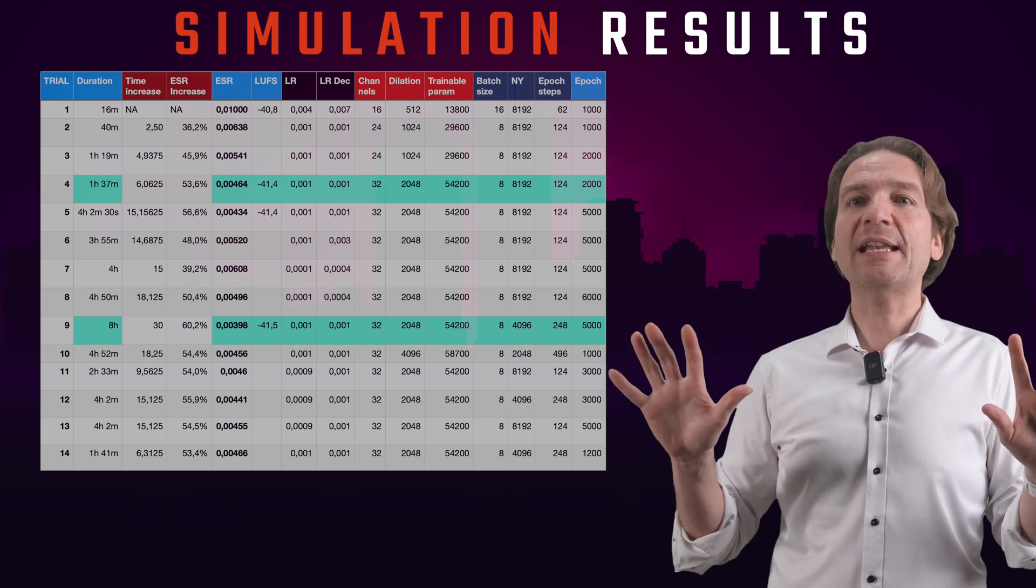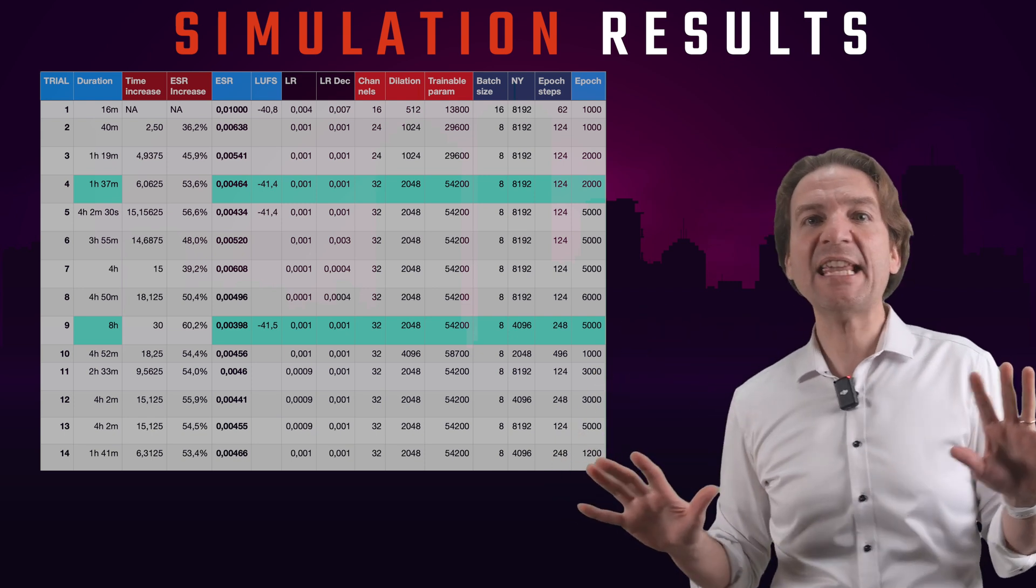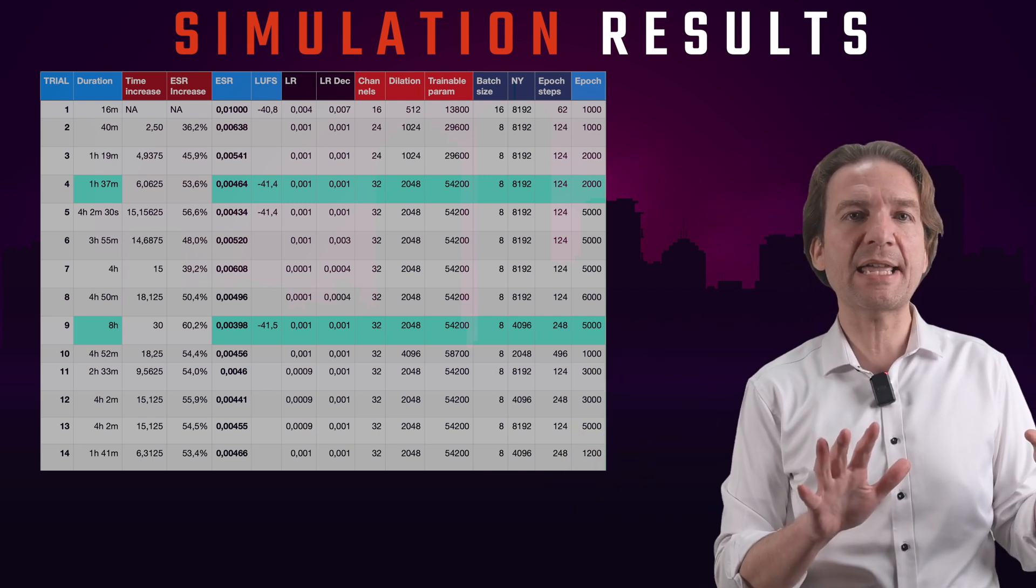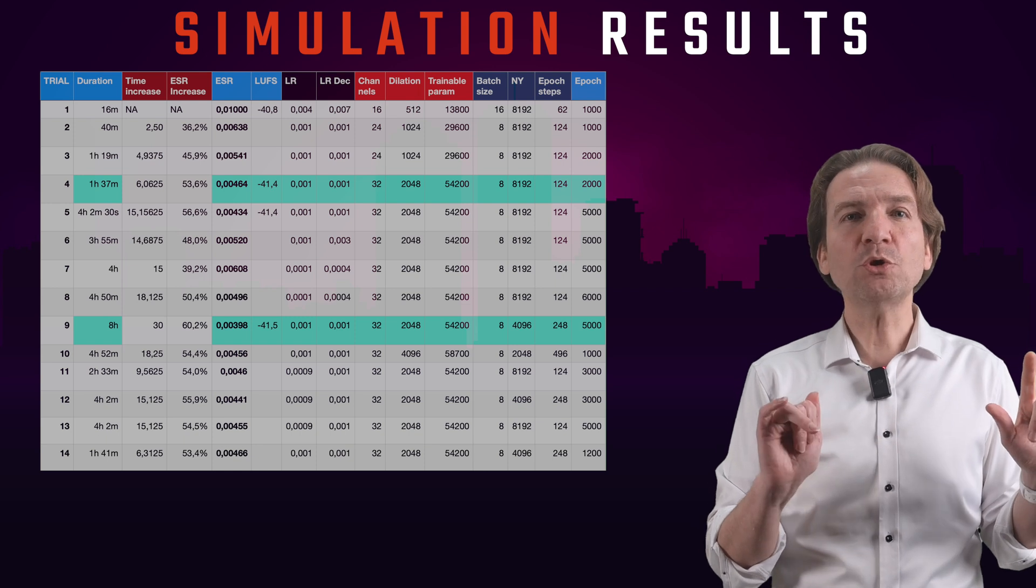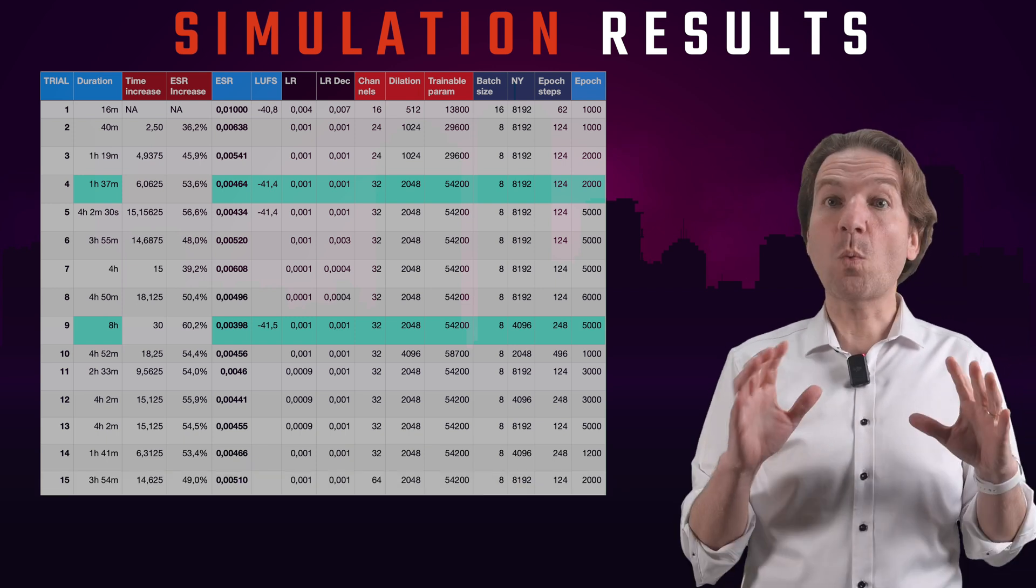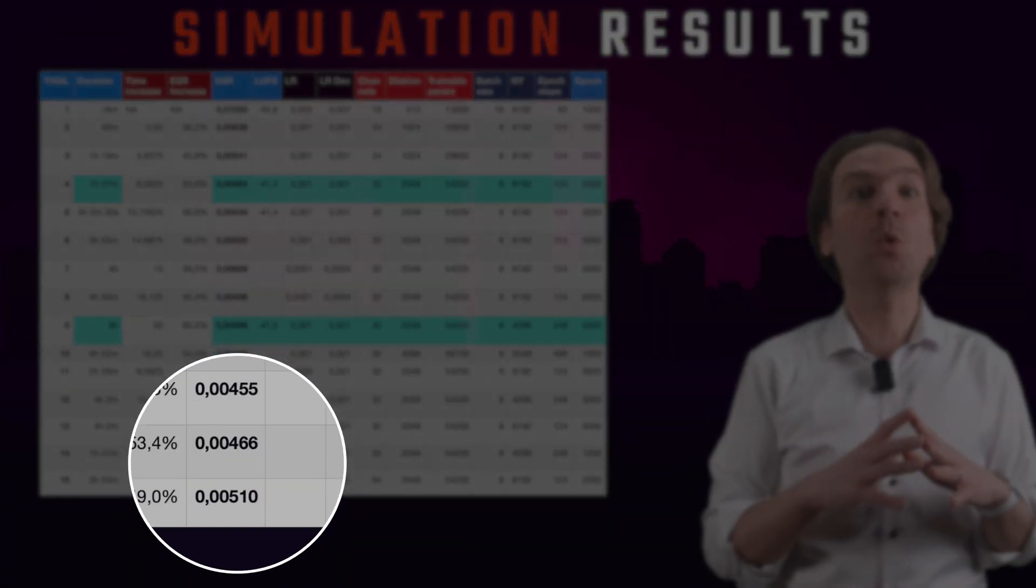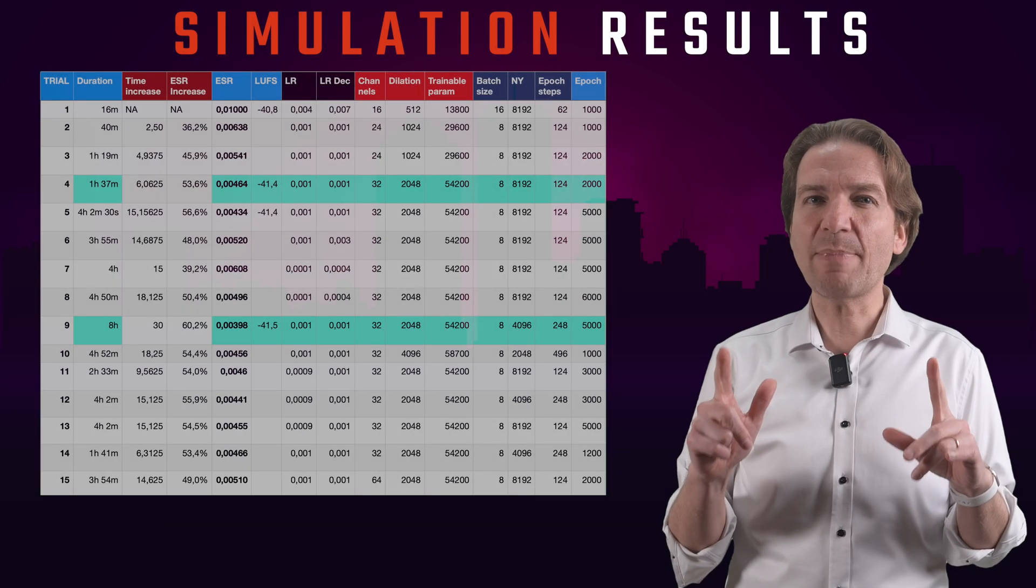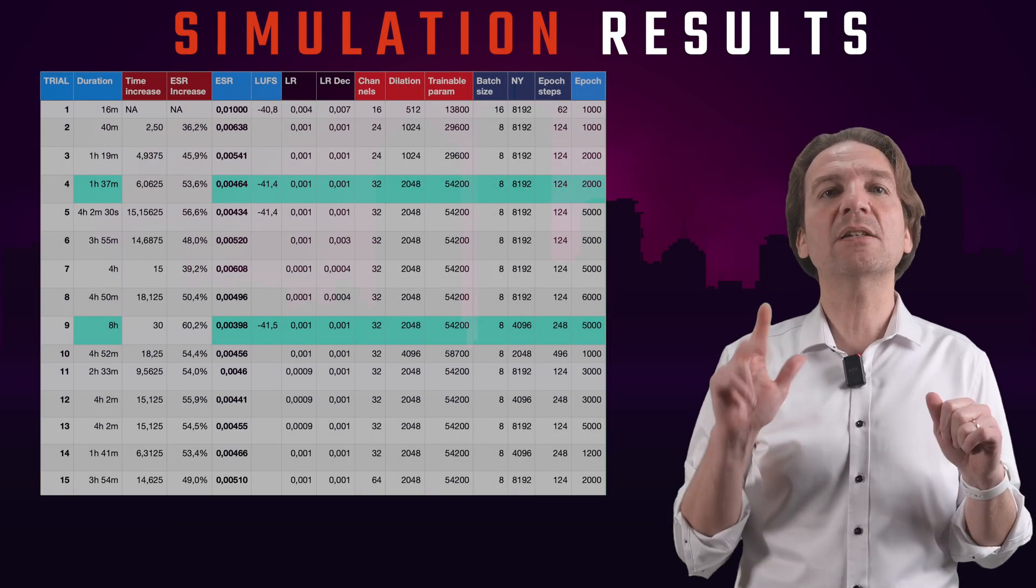OK, now with my trial number 15, I want to use the same parameters of my trial number 4, but I want to use 64 channels. Well, the result is actually worser. Therefore, I think that the best number of channels is actually 32.